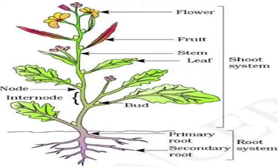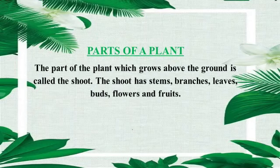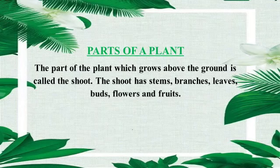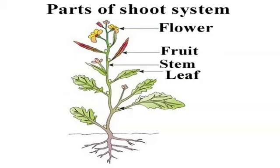Look at the picture. The part of the plant which grows above the ground is called the shoot. The shoot has stems, branches, leaves, buds, flowers and fruits. پلانٹ کا وہ حصہ جو زمین کے اوپر بڑھتا ہے، shoot کہلاتا ہے۔ Shoot میں stems، شاخیں، leaves، buds، پھول اور پھل ہیں۔ Look at the picture: parts of shoot system.